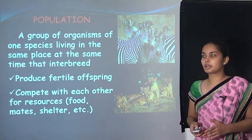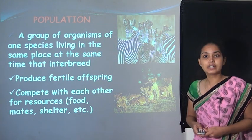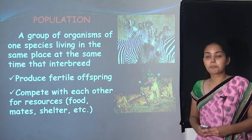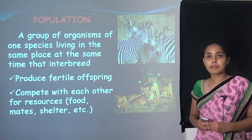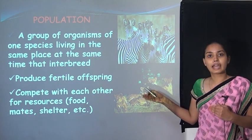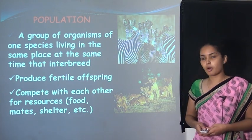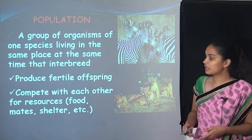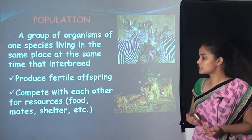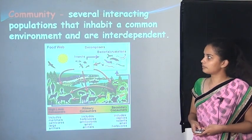Now what is population? A population is a group of organisms of one species living in the same place at the same time, and that interbreed to produce fertile offspring. They compete with each other for resources such as food, mates, shelter, etc.